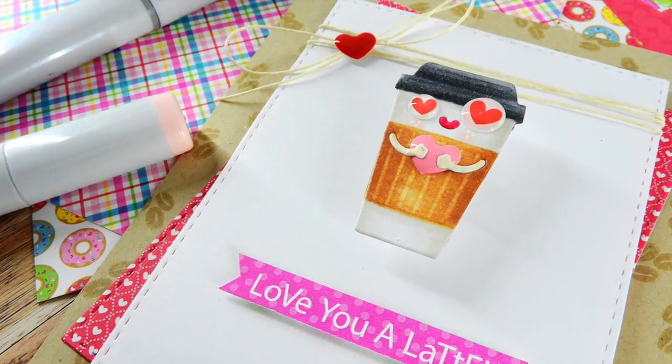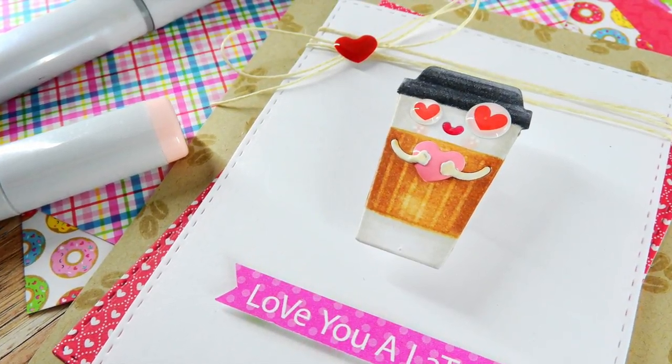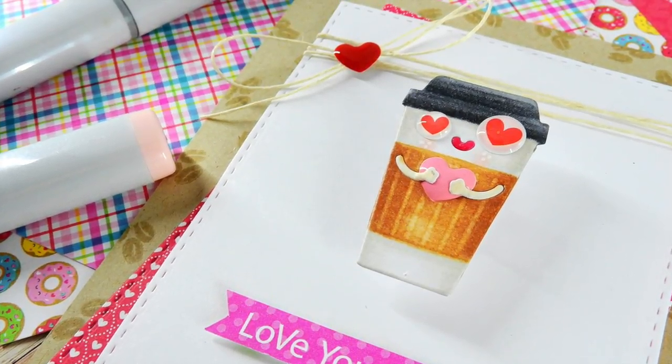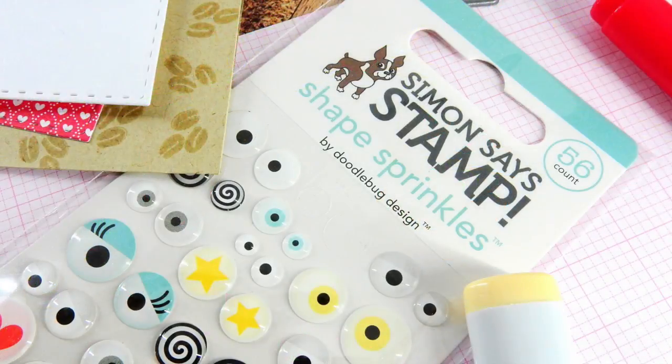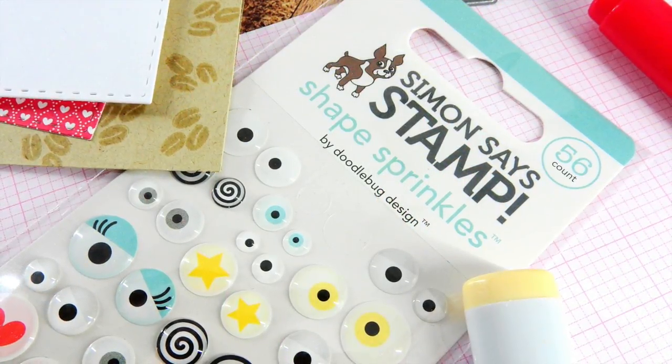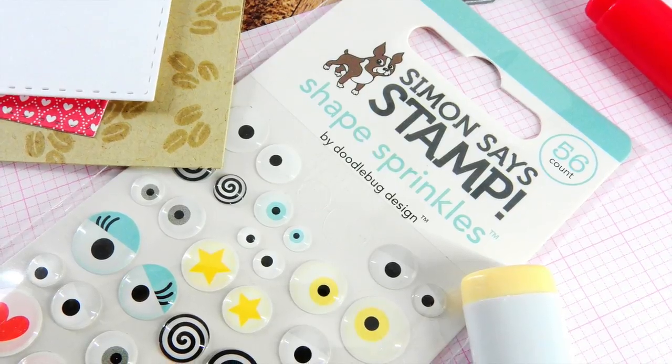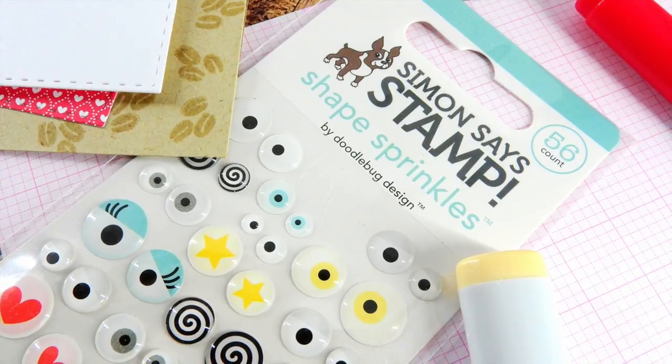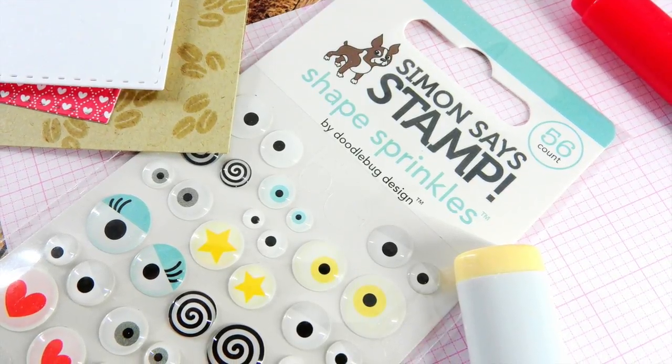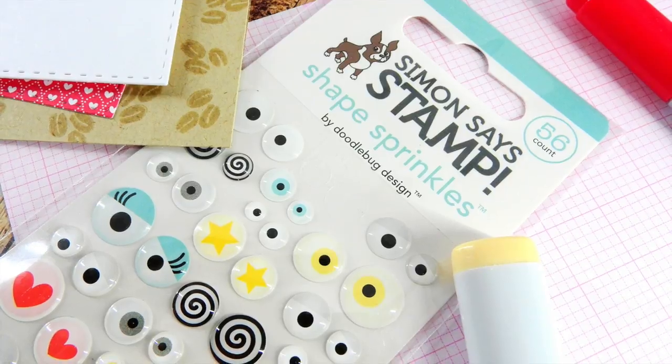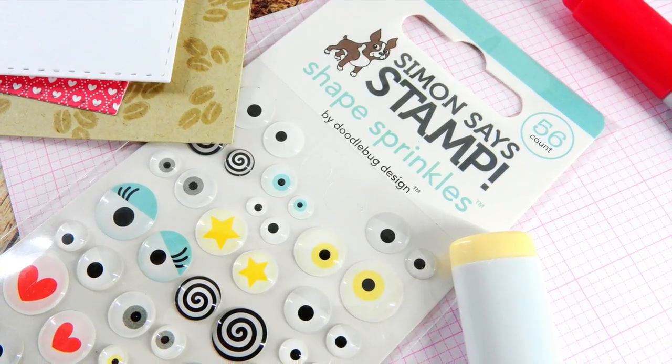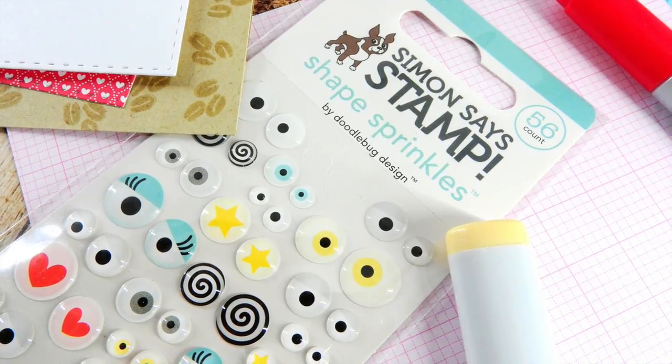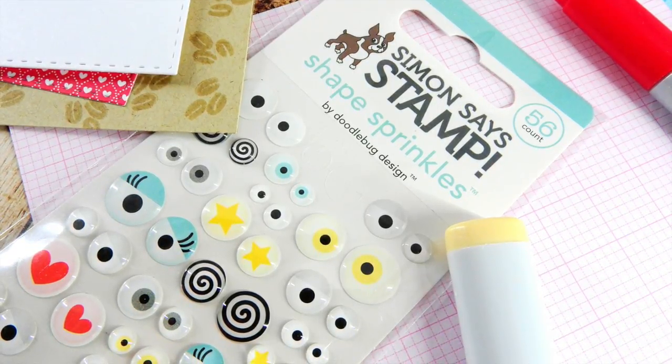I have this card to share with you today featuring the Simon Says Stamp Coffee Love Die, and I'm also going to be using the Doodle Bug Coffee Love Collection. Now the other product that I'm going to be using today is this really cute set of shape sprinkles by Doodle Bug Design. They were done exclusively for Simon Says Stamp and have a bunch of really cute googly eyes on them. They don't move, but they have that really neat googly enamel dot feel. These shape sprinkles are the All Eyes on You set, exclusive to Simon Says Stamp, and I'm going to be using them today on my card.